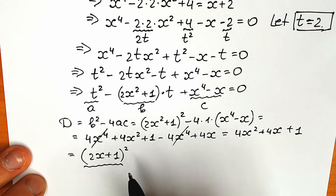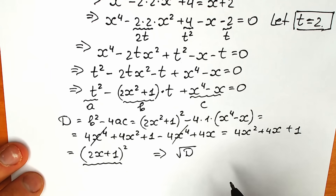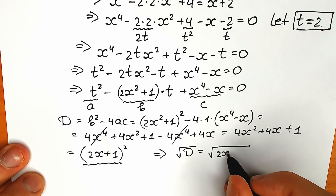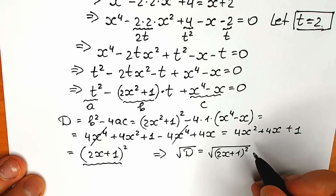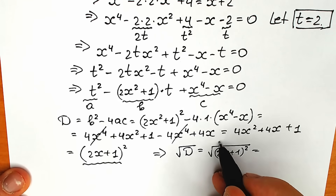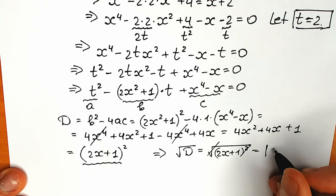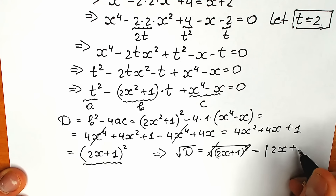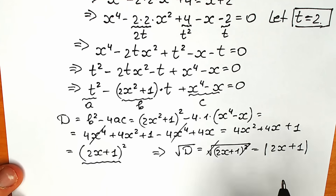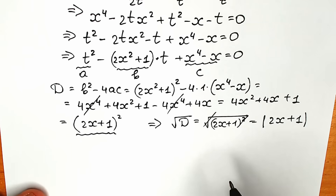This result is extremely useful because next we need to find the square root of the discriminant for our formula. The square root of (2x+1)² equals the absolute value of 2x+1. We can write it with absolute value to be correct, and in our formula we'll use plus or minus — so it changes nothing, but the correct way is with absolute value.